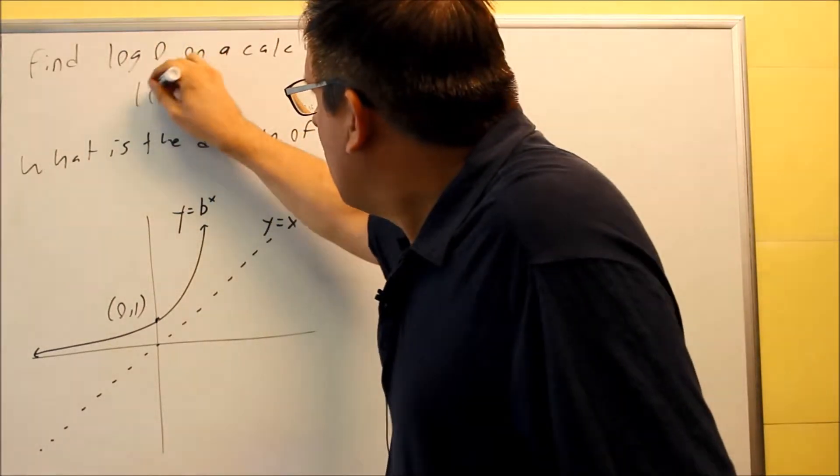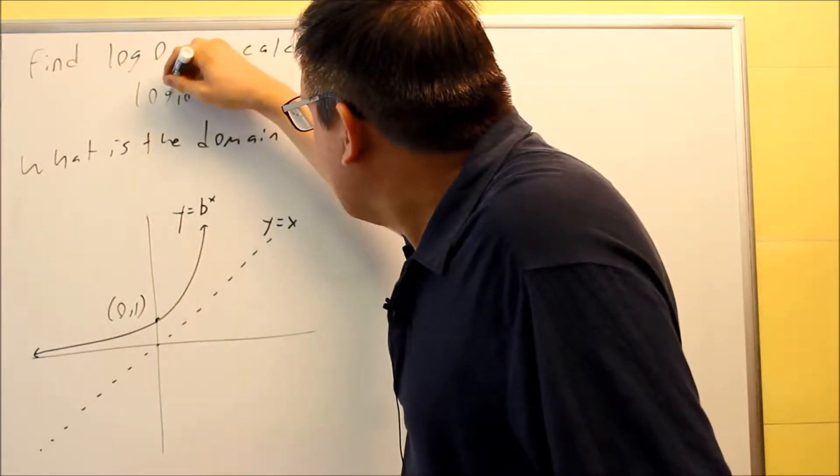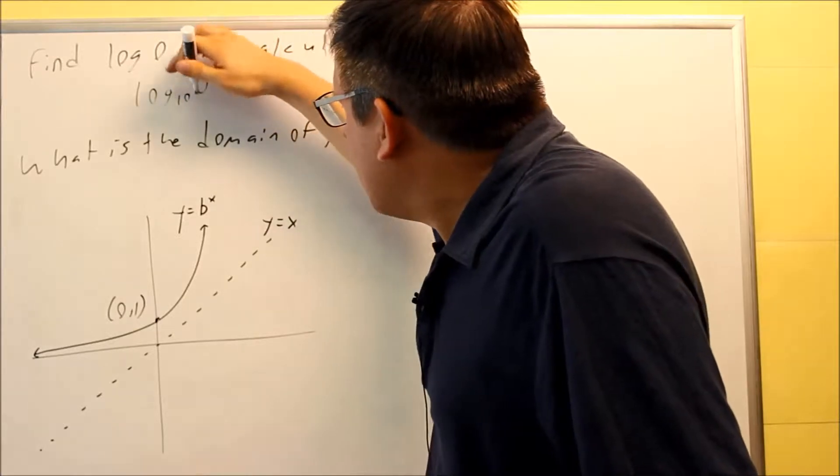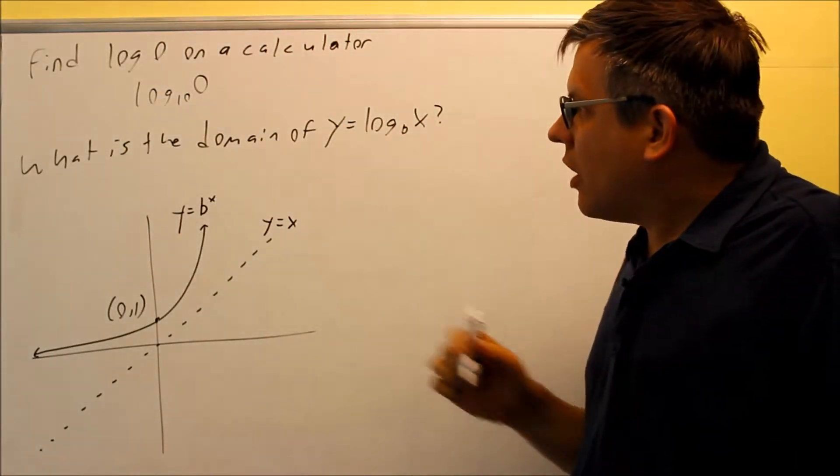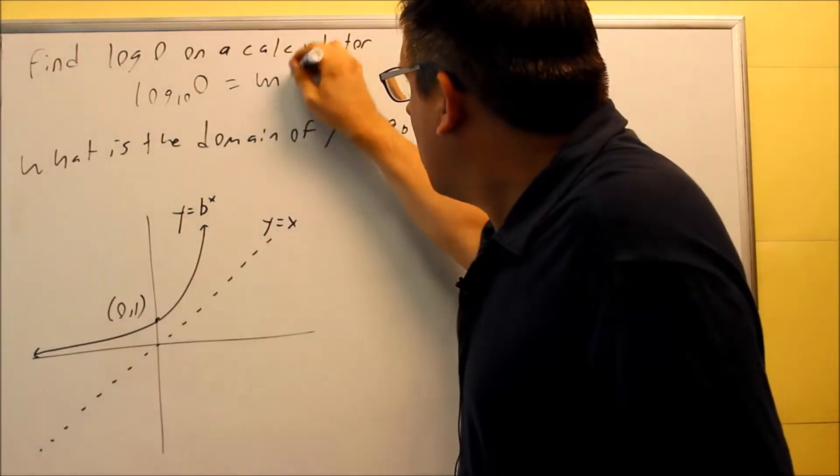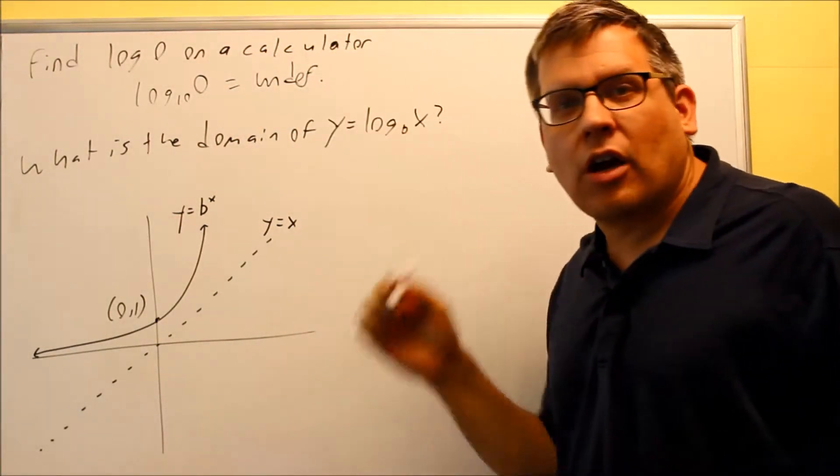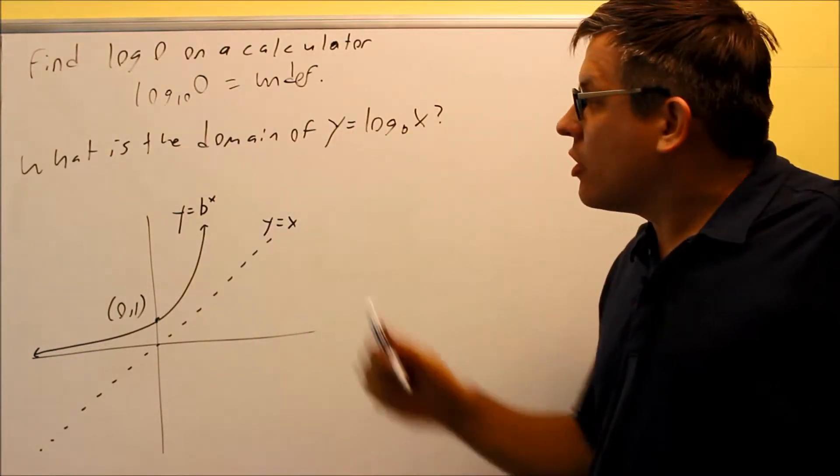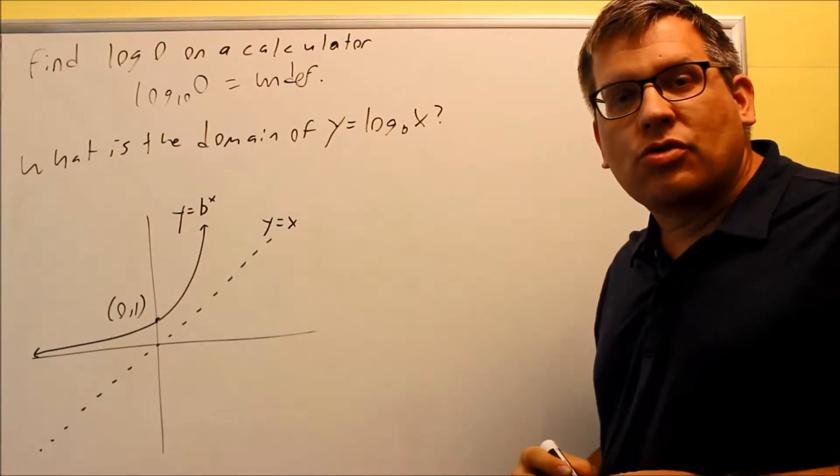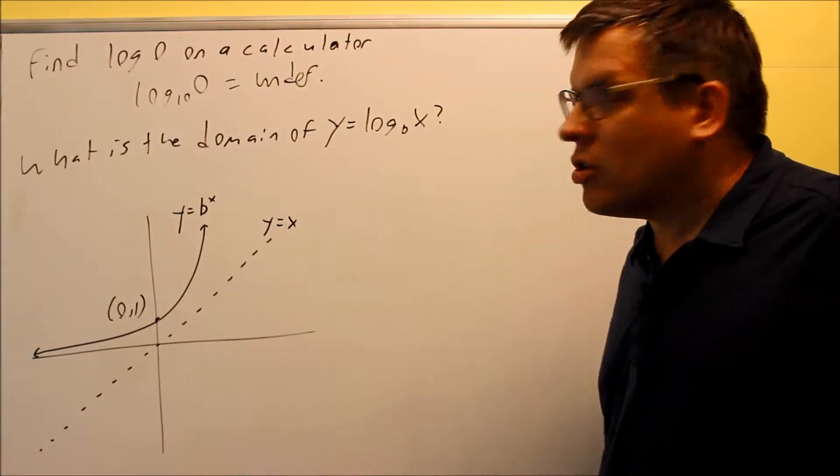So technically, I want to find log base 10 of zero. Now I can do log base 10 on my calculator. That's the log button that's on your calculator. Now if you put this in, the problem that you get is it's going to give you an error on your calculator or it's going to say undefined. So what that tells us is that we're not allowed to put any number we want into a log. There must be some kind of restriction on it.